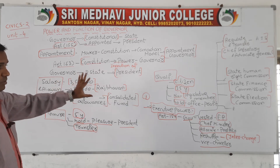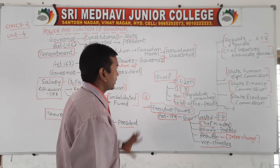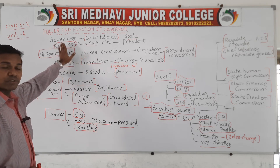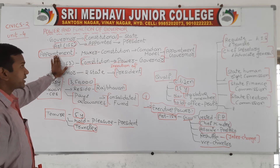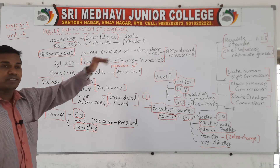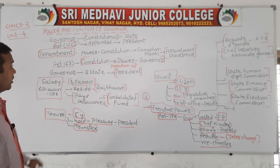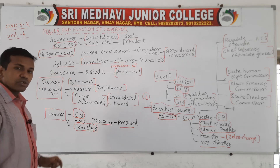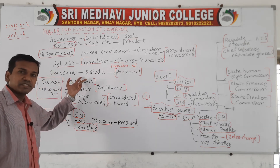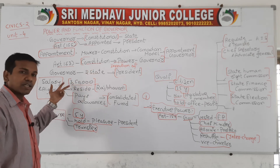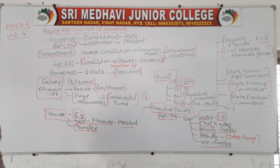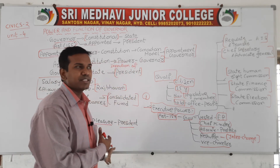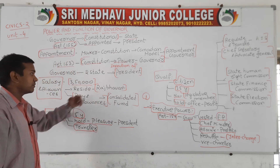The Governor also appoints the State Finance Commission and the State Election Commission. The State Election Commission is very important for conducting elections at the state level. To summarize, we have discussed appointment, salaries, terms, qualifications, and the executive powers of the Governor. The Governor is the constitutional head of the state, appointed by the President under Article 155, using the Canadian model.